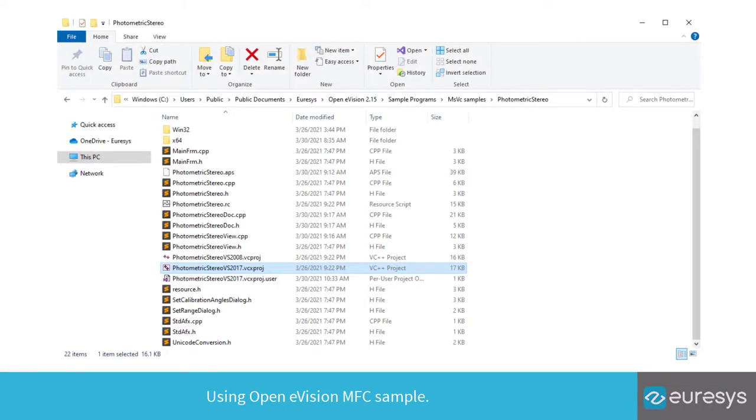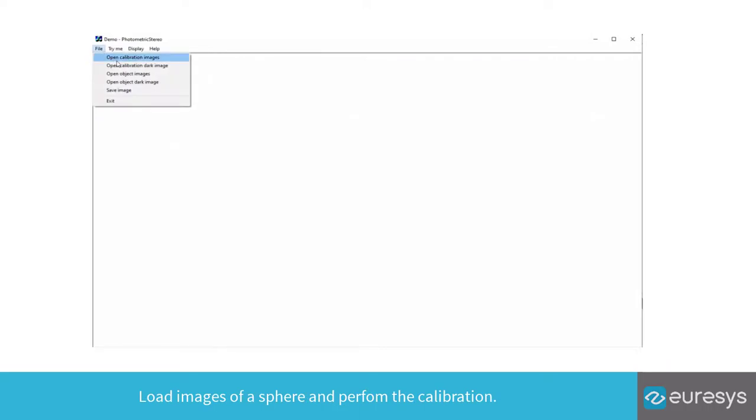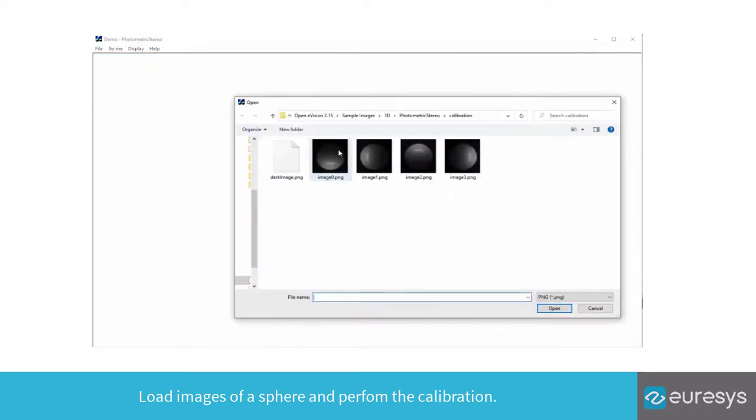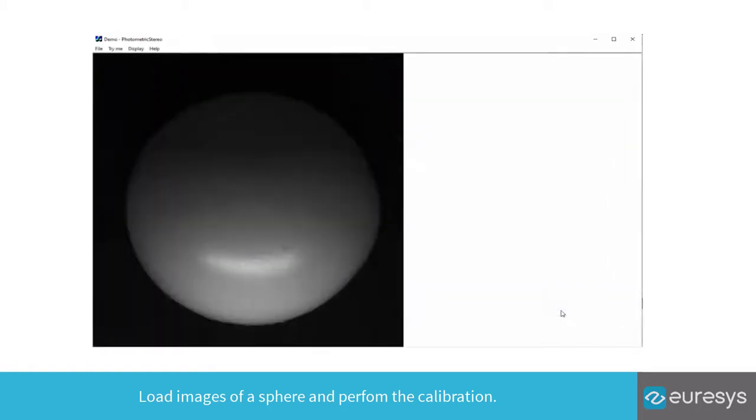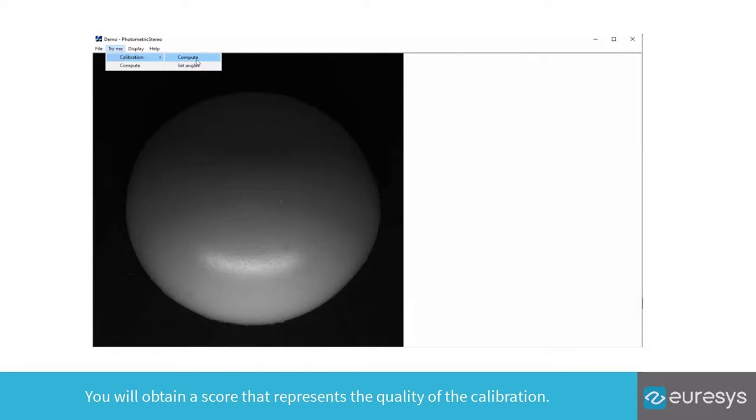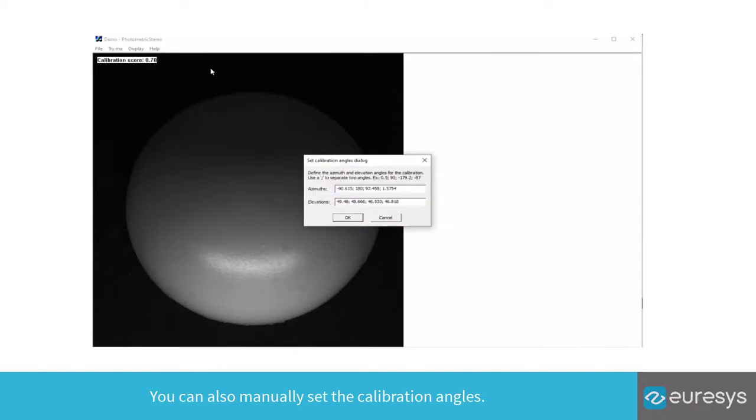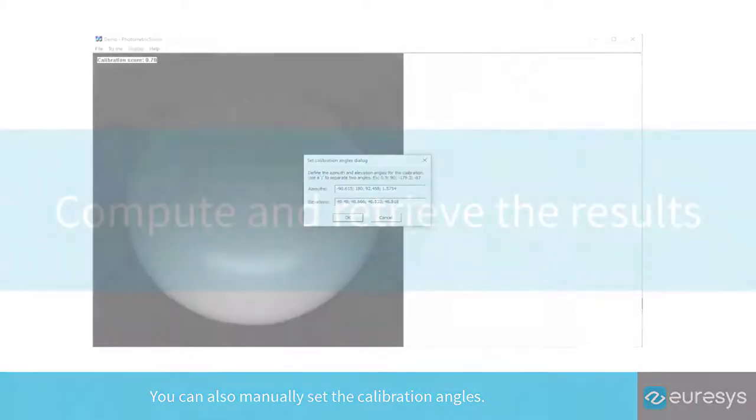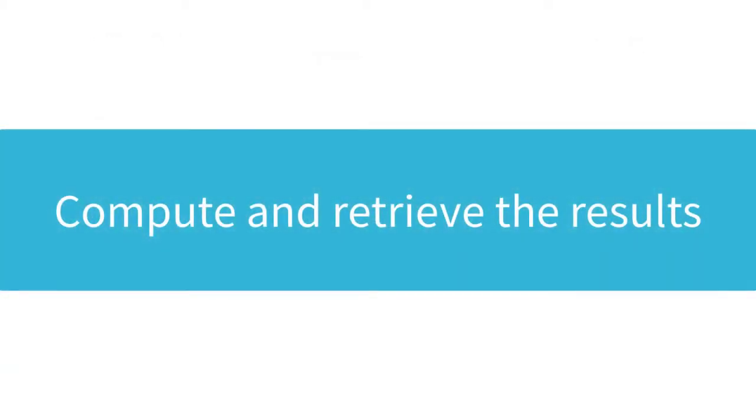Using OpenE-Vision MFC sample. Load images of a sphere and perform the calibration. You will obtain a score that represents the quality of the calibration. You can also manually set the calibration angles. Compute and retrieve the results.